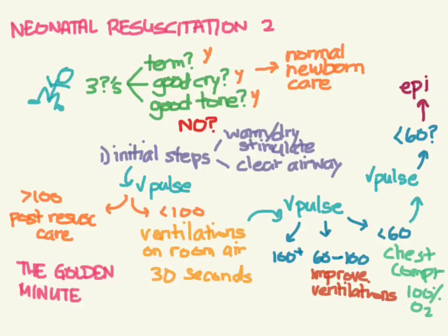Quick review: ask the three questions. If any answer is no, proceed with initial steps, then check the pulse. Greater than 100 — send to NICU. Otherwise, ventilate on room air for 30 seconds, recheck: greater than 100 — NICU; 60–100 — improve ventilations with MR SOPA; less than 60 — start chest compressions, 100% O2, recheck, and if still less than 60, give epinephrine.